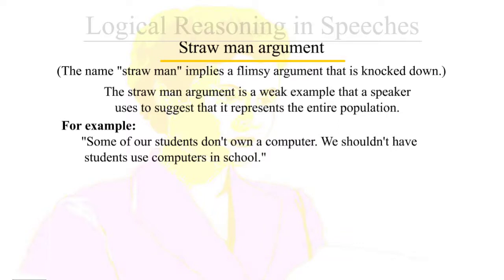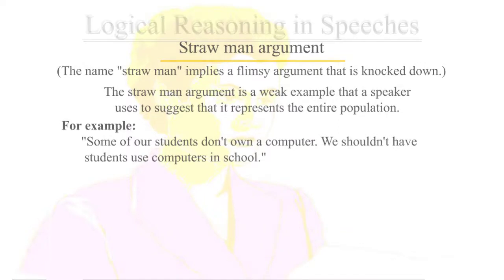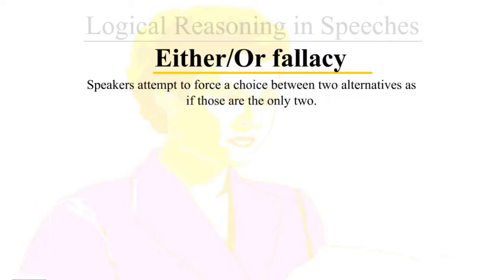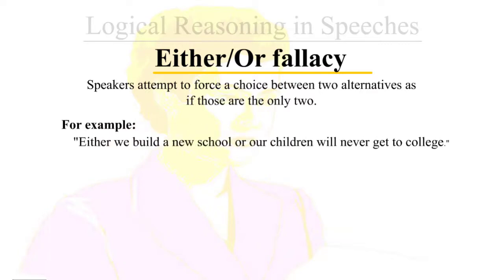Either-or fallacy: speakers attempt to force a choice between two alternatives as if those are the only two options. For example, 'Either we build a new school or our children will never go to college.'